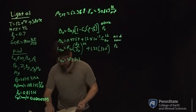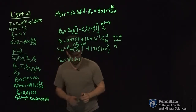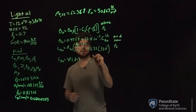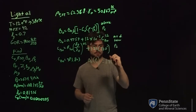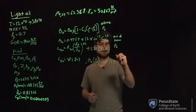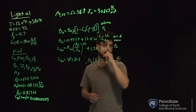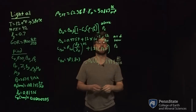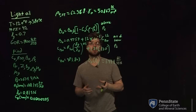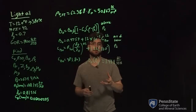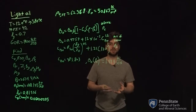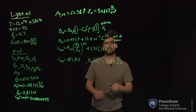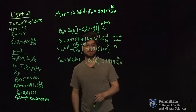We get that BO at bubble point equals 1.444 BBL per STB. This makes sense — your BO should never be less than 1, because you can't have a reservoir barrel of oil with greater volume than your stock tank barrel. Your stock tank barrel is oil at standard conditions, fully expanded, while your reservoir barrel is compressed.